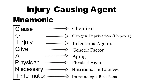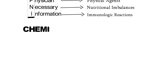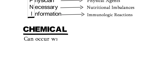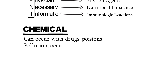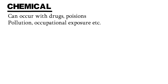Now we are going to discuss these causative agents one by one. The first one is chemical. There are many chemicals which are responsible for cell injury — like drugs, poisons, or pollution. Or there may be occupational exposure, like asbestos, etc., that can cause cell injury.